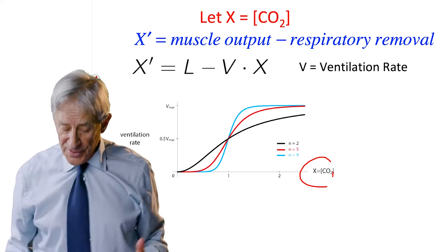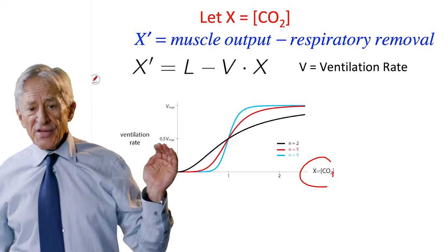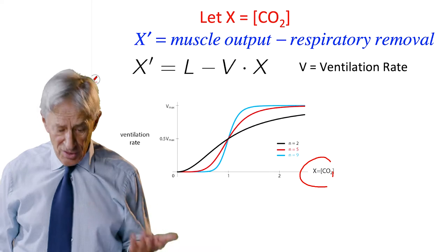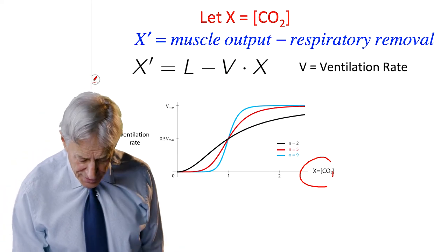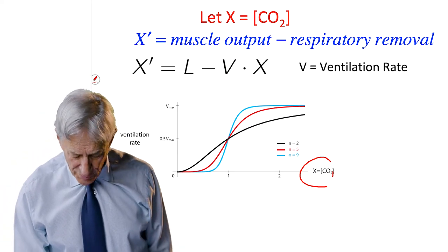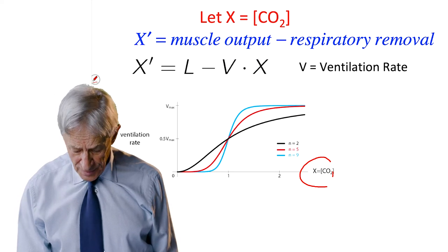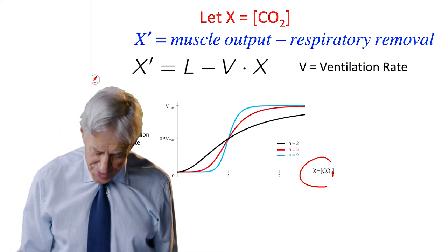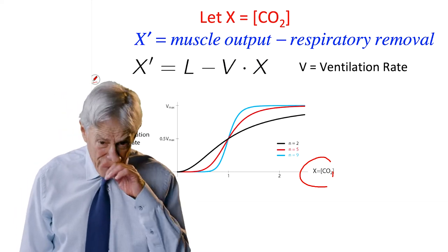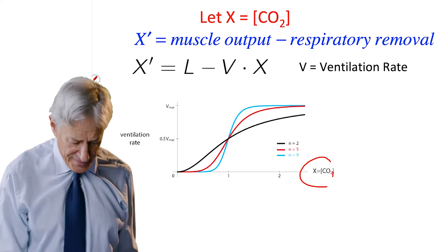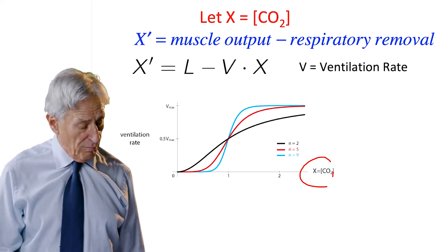And once again, the upgoing sigmoid can have various slopes. It can be very gentle feedback, as in the N equals 2 black tracing. It can be more sensitive feedback, like the N equals 5 red. It can be very sensitive, like the N equals 9 blue.